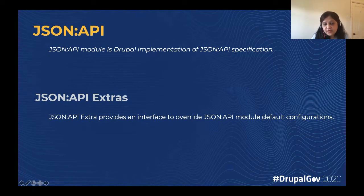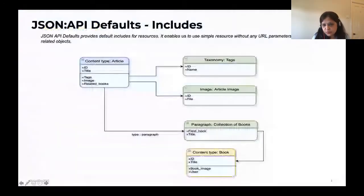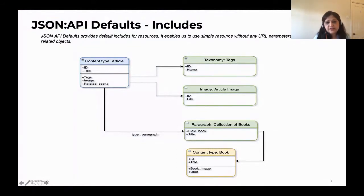In a real-world scenario, we have to do more on top of these two modules to make this decoupled environment work. In JSON-API, everything is a resource, and each resource is connected to another resource in the form of relationships. For example, we have a content type called article, which has some basic fields like ID and title. On top of that, it has entity references — a tag name associated with an article, an image associated with an article, and a paragraph called related books, which references another content type called book. This is a general structure for any content type.